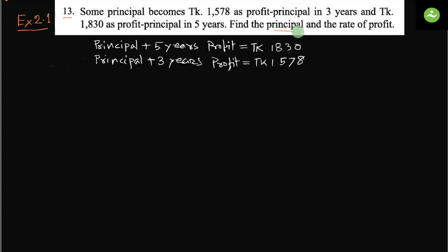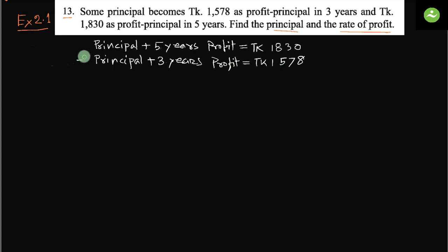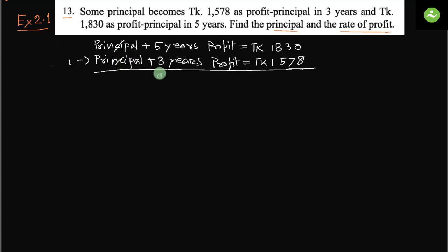We need to find the principal and the rate of profit. From the question: principal plus five years profit equals taka 1830, and principal plus three years profit equals taka 1578. If we subtract one from the other, the principal cancels out and we get two years profit.